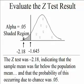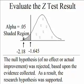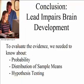The z-test was negative 2.18, indicating the sample mean was far below the population mean, and the probability of this happening just due to chance is 0.05. So we say this could be due to chance, but most likely it's because lead dust does impair IQ. Our null hypothesis of no effect or actual improvement from lead dust was rejected based upon our evidence. The sample mean was 91. As a result, the research hypothesis was supported — lead dust actually does impair brain development. Conclusion: lead impairs brain development. To evaluate this evidence, we needed to know about probability, distribution of sample means, and hypothesis testing.